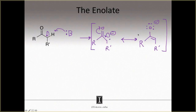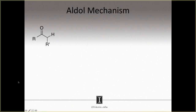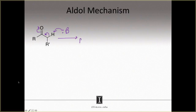Now we know why sp3 hybridized alpha carbons are special. This leads us to the aldol reaction mechanism. Typically, you have a carbonyl compound with an sp3 hybridized alpha carbon, to which you add some base to form an enolate. Rather than showing this in two steps — first forming the carbanion, then drawing the resonance structure — we directly form the enolate using the base in a single step.